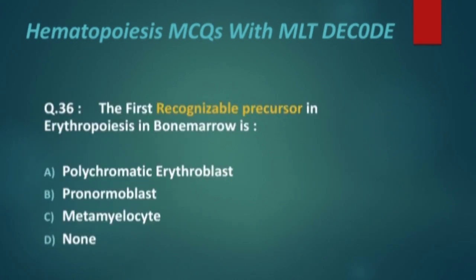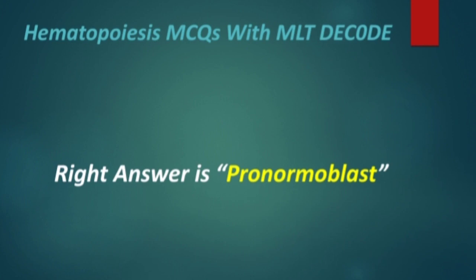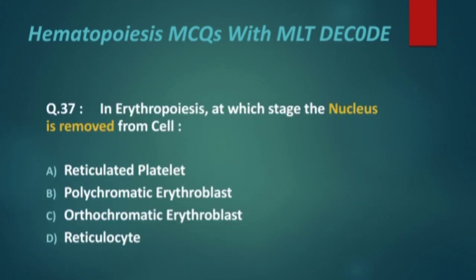Next: the first recognizable precursor in erythropoiesis in bone marrow is — options are: polychromatic erythroblast, pronormoblast, metamyelocyte, and none. The right answer is pronormoblast.